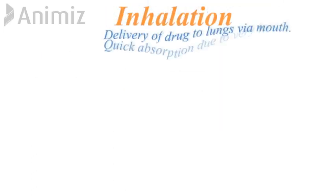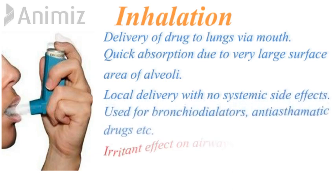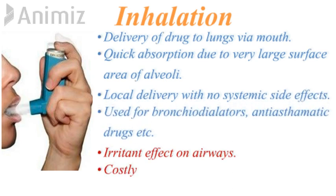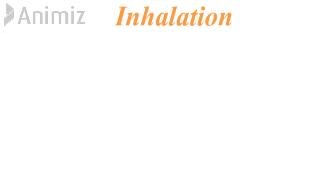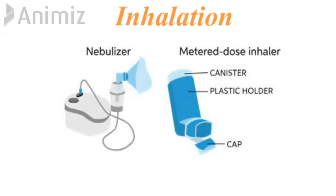Next is inhalation route of administration, in which the drug is delivered to the lungs via the mouth. The rate of absorption is quick because of the large surface area of the alveoli, and it is mainly used for bronchodilators and asthmatic drugs for local delivery with minimal side effects. Limitations include airway irritation and high cost due to required devices like a nebulizer, which volatilizes the drug for inhalation, or a metered dose inhaler in which the drug is filled with a propellant under pressure and sprayed when released.